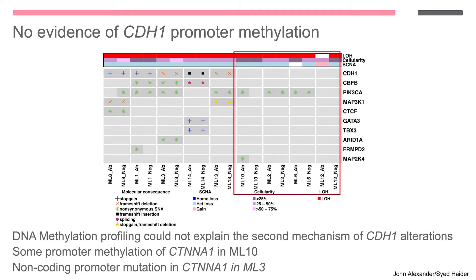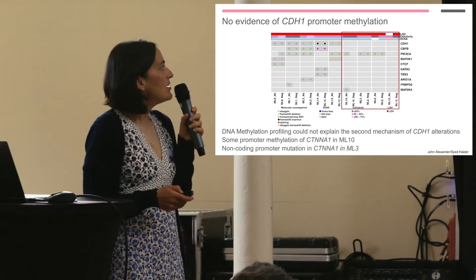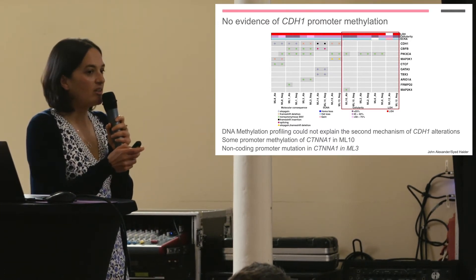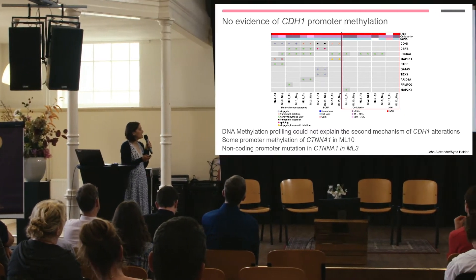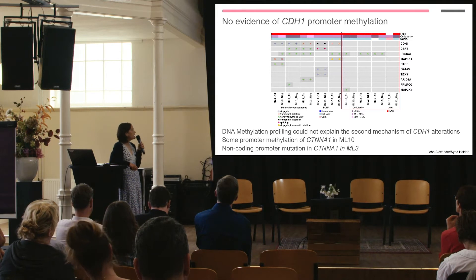We're still unclear about why the aberrant components retain some e-cadherin expression even though they seem to have a lobular phenotype. Talking with Mateus, we went back and did some P-cadherin staining on these tumours and they're all P-cadherin positive. We're starting to think these are actually more plastic — lobular breast cancers sampled at a particular snapshot in time — and we're going to look into this e-cadherin to P-cadherin switching, though that's yet to be confirmed.